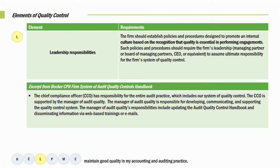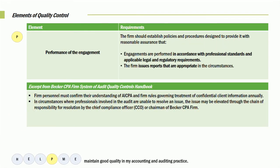The next item is the P — performing of the engagement. The firm should establish policies and procedures designed to provide reasonable assurance that engagements are performed in accordance with professional standards and applicable legal and regulatory requirements, and that the firm issues reports that are appropriate under the circumstances. This includes compliance with AICPA and firm rules regarding such things as confidential information and work paper documentation. Firm personnel must confirm their understanding of the AICPA and firm rules regarding confidential information on an annual basis. In circumstances where professionals are unable to resolve any issue, it may be elevated through the chain of responsibility all the way up to the Chief Compliance Officer or the Chairman.